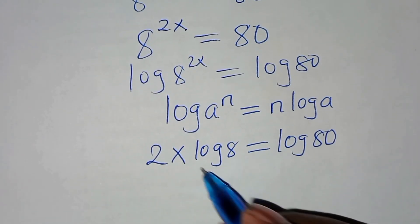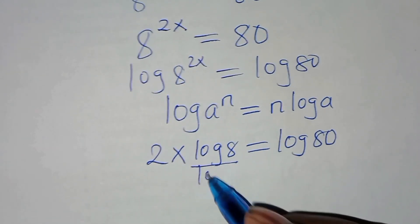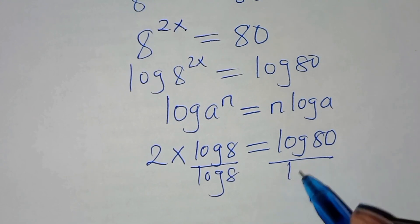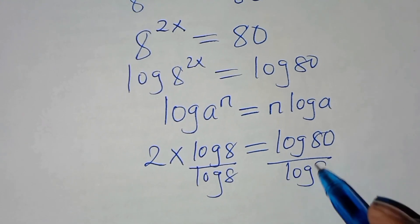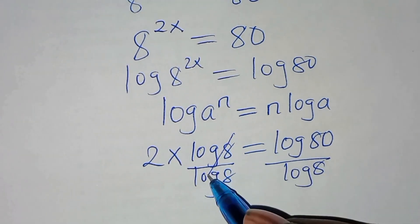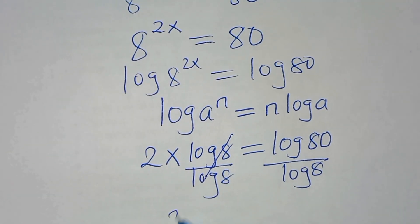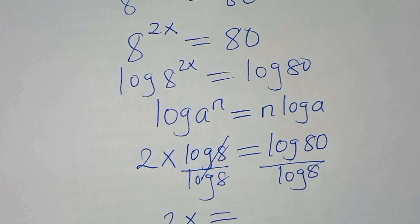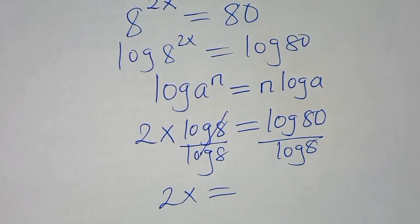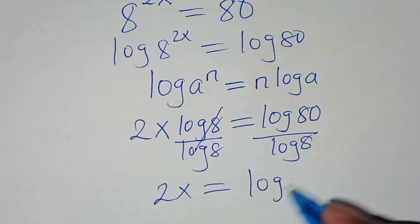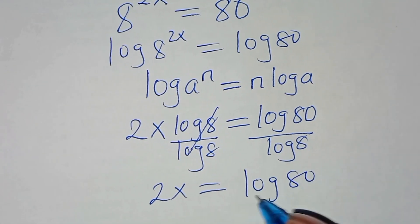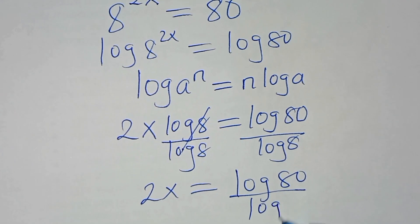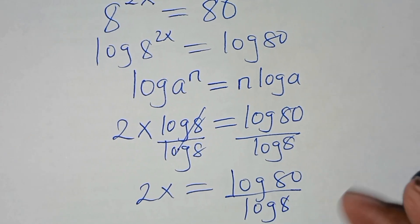So let's divide both sides by ln(8), so that now here we have 2x is equal to ln(80) divided by ln(8).